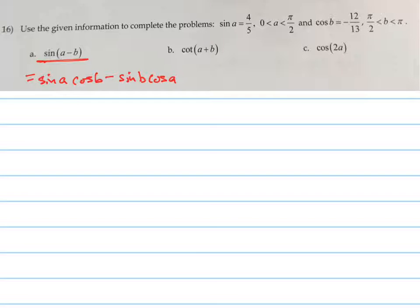They're telling us that the sine of A is four-fifths. So any time you see a sine of A, just write four-fifths in. And that it's in the first quadrant, which is going to help us to find the cosine of A.